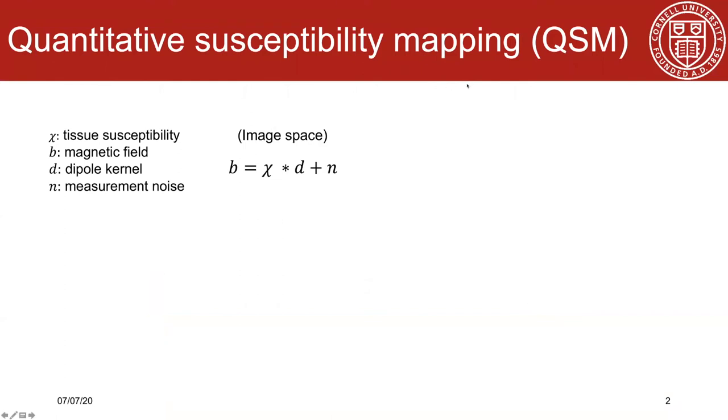Quantitative Susceptibility Mapping is a novel image contrast in magnetic resonance imaging. It measures the underlying tissue apparent magnetic susceptibility which is able to quantify specific biomarkers such as iron, calcium, and gadolinium.